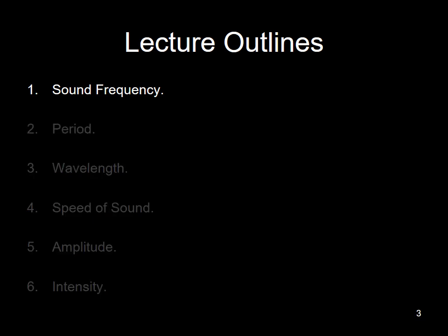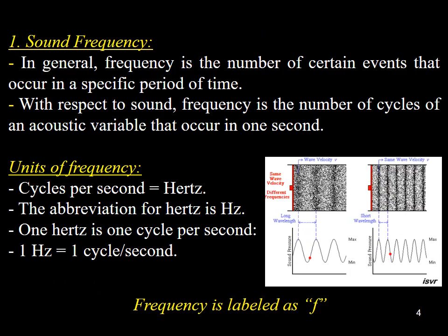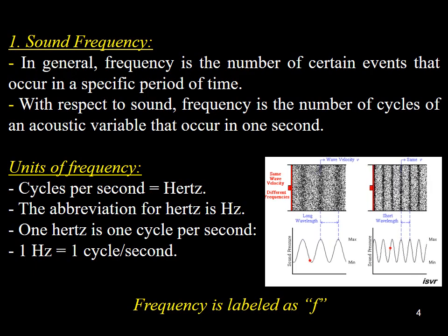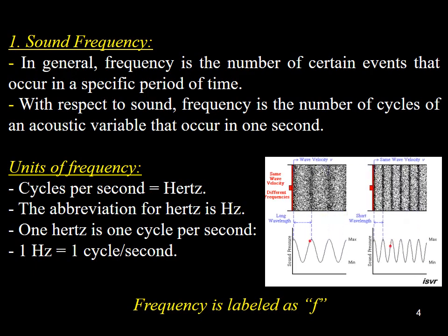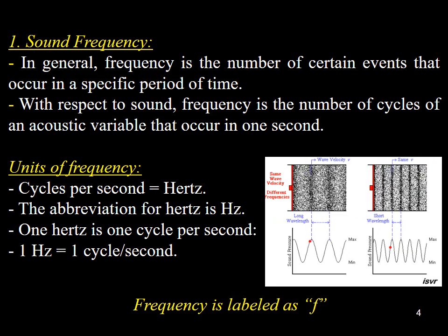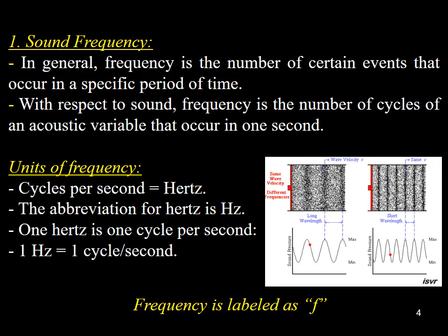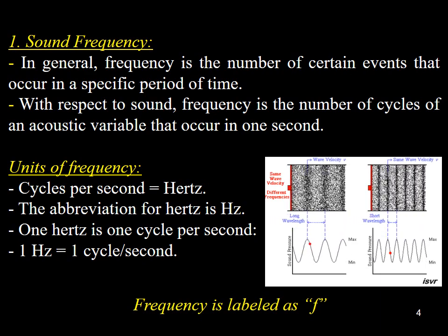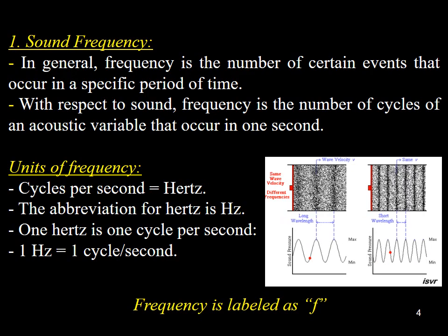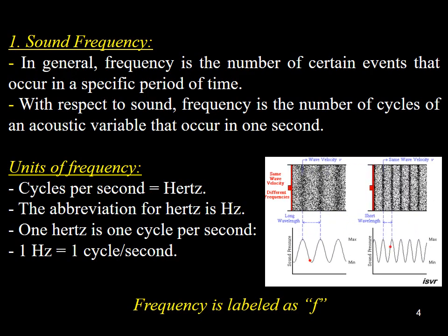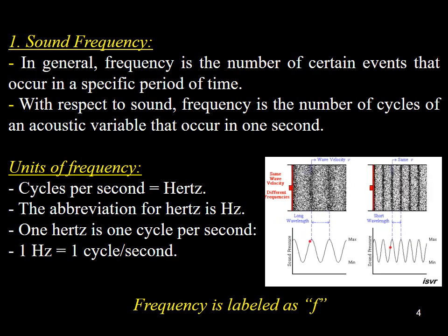Let us begin by discussing the concept of sound frequency. In general, frequency refers to the number of occurrences of a specific event over a given time period. In the case of sound, frequency is defined as the number of acoustic variable cycles that occur in one second. Acoustic variables describe the events that occur in sound waves, and include pressure, density, temperature, and particle motion.